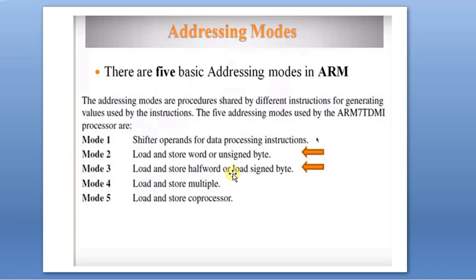In the ARM processor there are three data formats: word (32-bit), half-word (16-bit), and byte (8-bit). Load signed byte loads a negative 8-bit value from memory into a register — there is no store operation for signed byte. There are no memory-to-memory operations supported by the ARM processor, as it is a RISC processor, and misaligned data is also not supported.